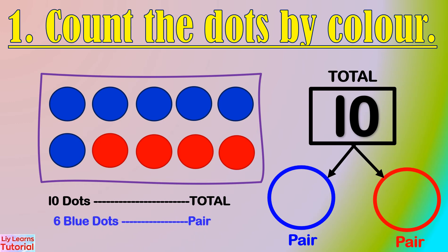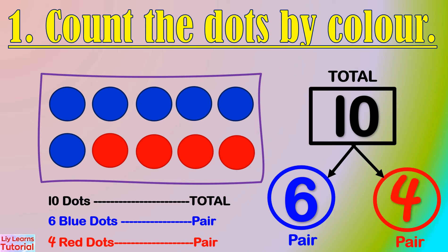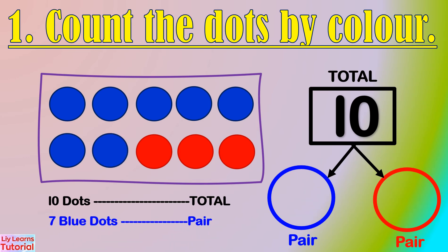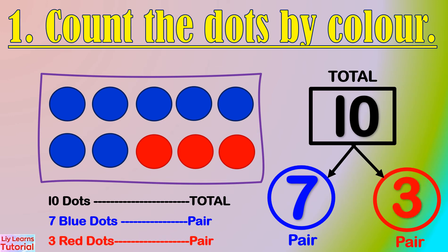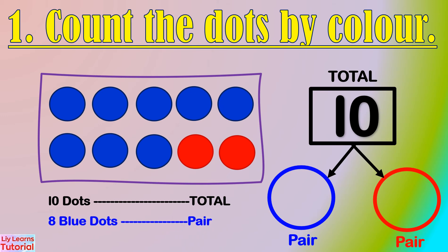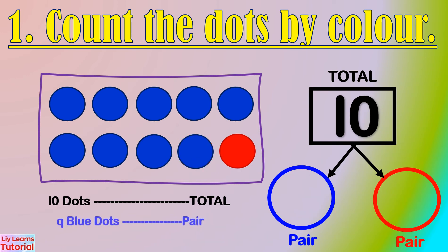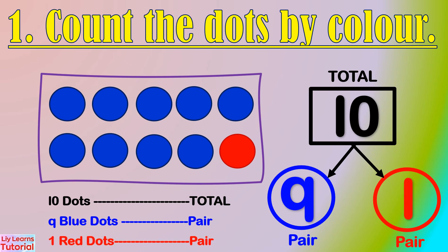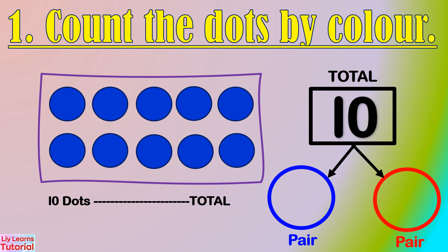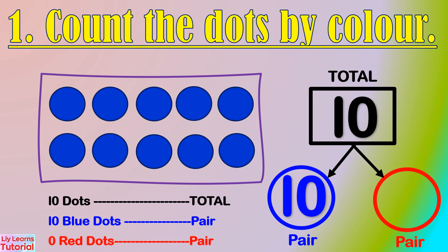There are 6 blue dots and 4 red dots. The number pair is 6 and 4. There are 7 blue dots and 3 red dots. The number pair is 7 and 3. There are 8 blue dots and 2 red dots. The number pair is 8 and 2. There are 9 blue dots and 1 red dot. The number pair is 9 and 1. Here, there are 10 blue dots and 0 red dots. The number pair is 10 and 0.